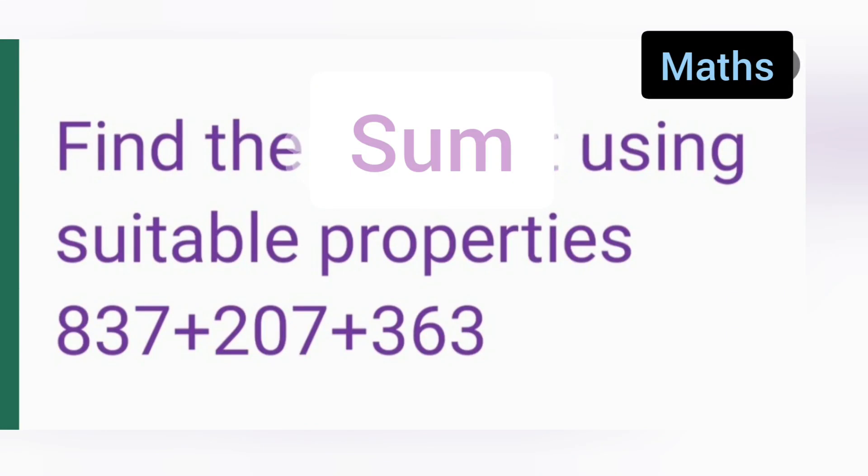In today's class of mathematics, today's question is: find the sum using suitable properties, 837 plus 207 plus 363.